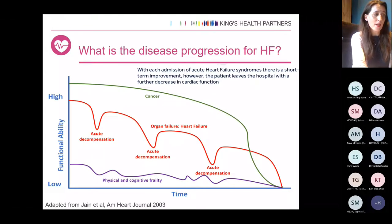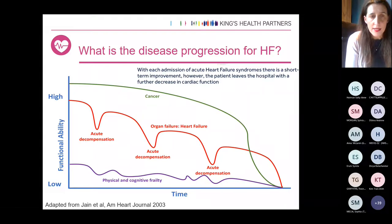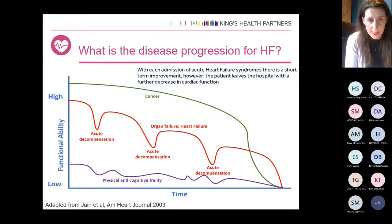Why does this matter? Looking at this slide, with time on the x-axis and functional ability on the y-axis, every time a patient with heart failure decompensates their functional ability reduces. We want to get medical therapies on board for patients with HFrEF that will stop decompensations, prevent hospitalisations, make patients feel better, and essentially reduce mortality.